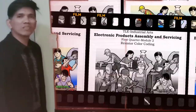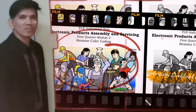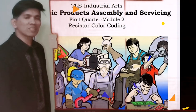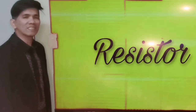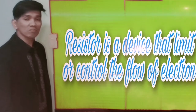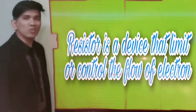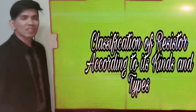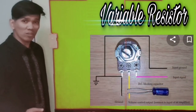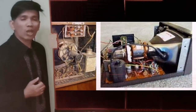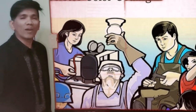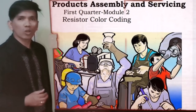Hello everybody. Welcome to New Normal Education. Welcome to Electronic Products Assembly and Servicing. In our previous discussion, we already discussed the importance of resistors in electronics technology. We determined the definition, function, and usage of resistors, and classified them according to types and kinds. We also tackled the application of resistors in the electronics industry. Today, we will continue with Module Number 2 about resistor color coding.